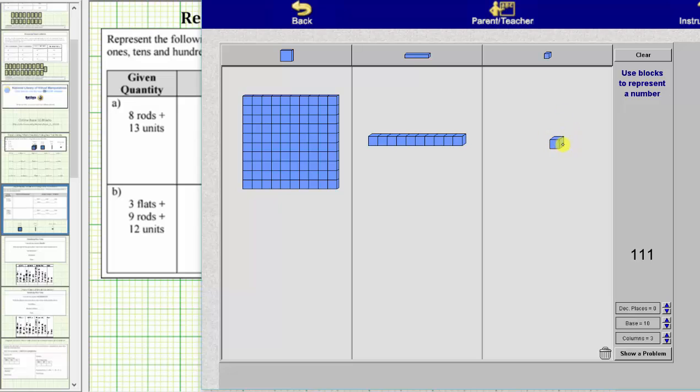10 units equal one rod, one rod equals 10. 10 rods equal one flat, one flat equals 100. We can see one flat equals 100 units.